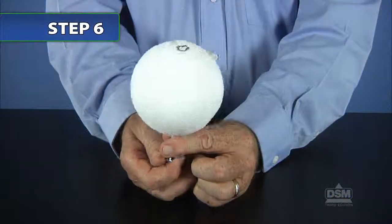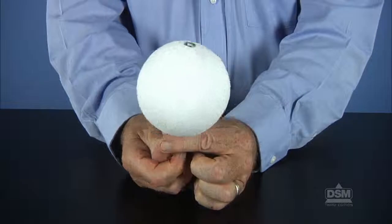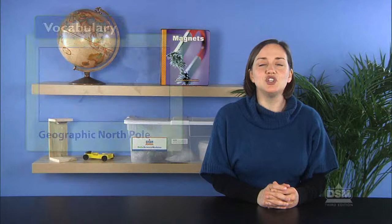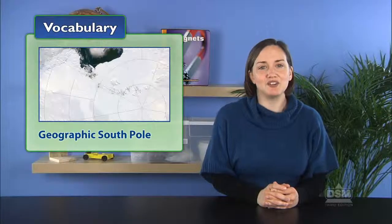Show the class the earth model and explain that earth spins on an axis, represented by the bolt through the ball, and that the ends of the axis are known as earth's geographic north pole and geographic south pole.